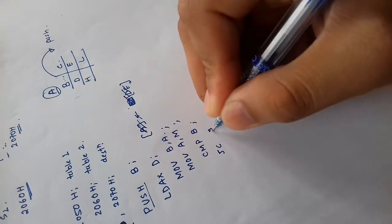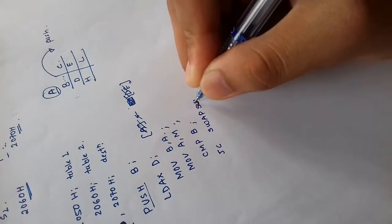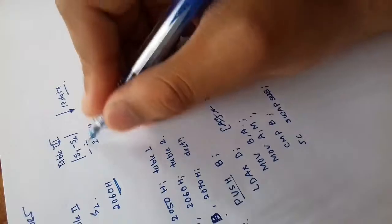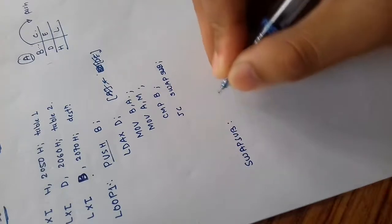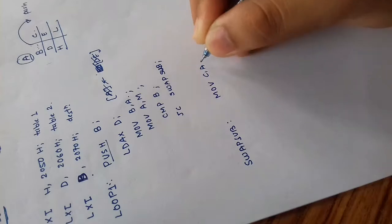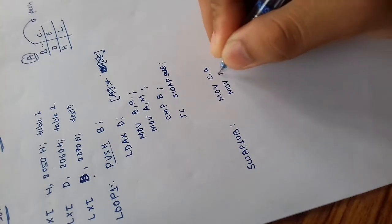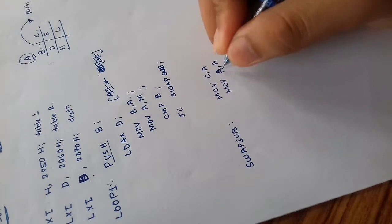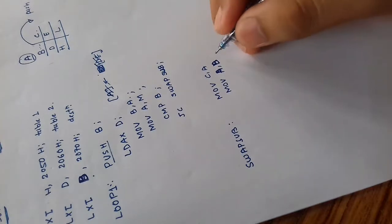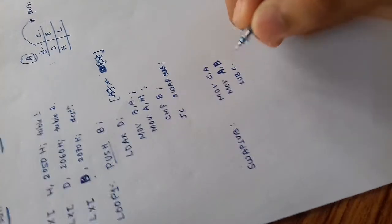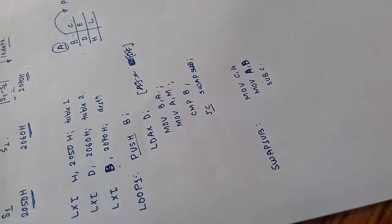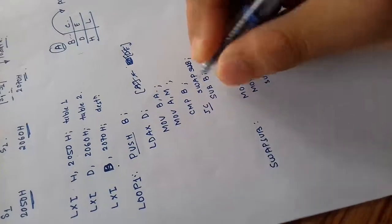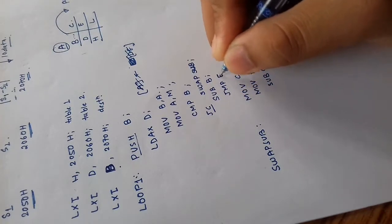If we obtain a carry, then we need to swap because we need a positive result in the table. In the swap case, we move the accumulator content to C, move the content of B to the accumulator, and subtract the value in C from the accumulator. This jump will transfer execution to the swap location. Otherwise, we subtract the value from B and jump to another location unconditionally.